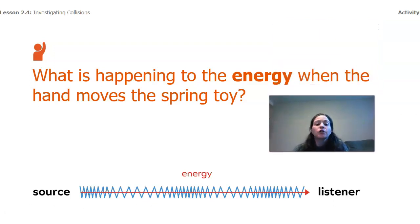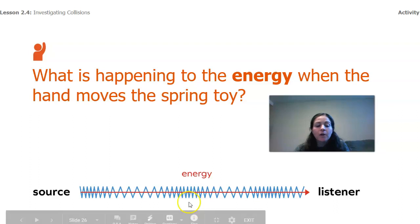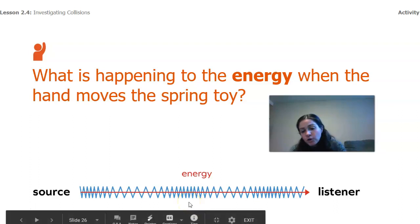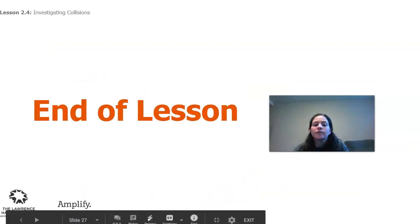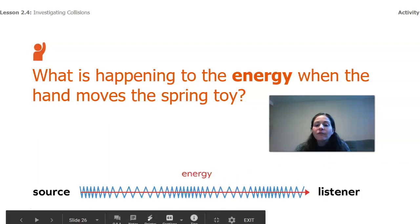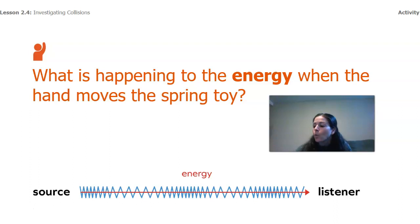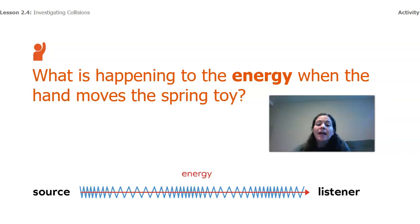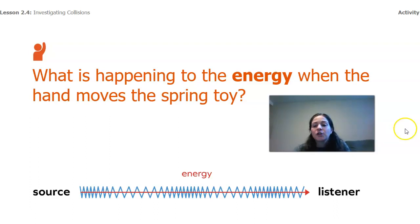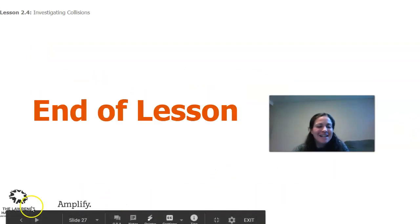So what happens to the energy when the hand moves the spring toy? The energy travels through the springs — one spring hits another, hits another, hits another. For every single one of these, one piece is hitting another, is hitting another. We saw that in the sim, we saw that in the coins, and we saw that in the spring toy. That's an idea we're going to carry with us for our lesson tomorrow. I'm excited to see you tomorrow — have a great day.